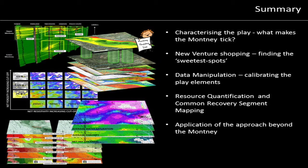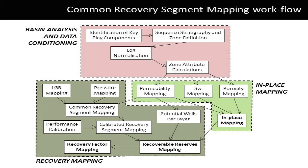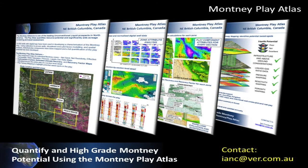In summary, the workflow has been to first characterize the play and identify the key play elements of the system, then stack those play elements to identify potential liquids-rich sweet spots. Using the digital well data and calibrating to producing wells, we efficiently mapped the play elements and conducted zone attribute work to analyze the key attributes. With those attributes we put together our resource quantification, and finally added the recovery component by creating and using our common recovery segment map. If you have an existing Montney position or are interested in developing a Montney new venture position, the Montney play atlas provides all individual play component maps for each identified Montney zone and quantifies resource potential across the play. For questions on the Montney play atlas or the approach, please feel free to contact me at enc@ver.com.au.